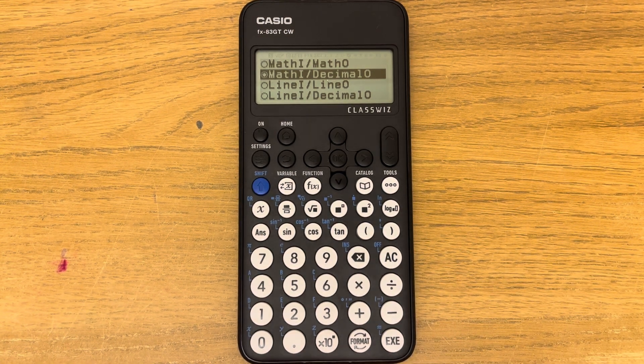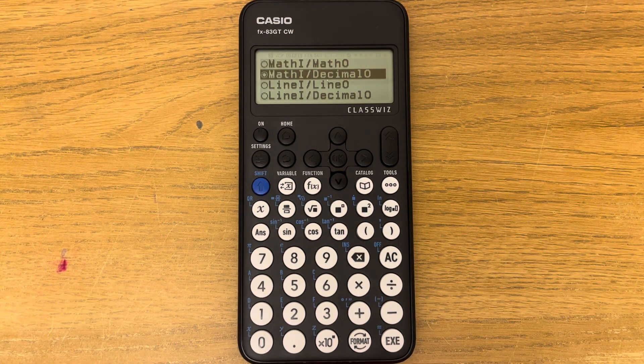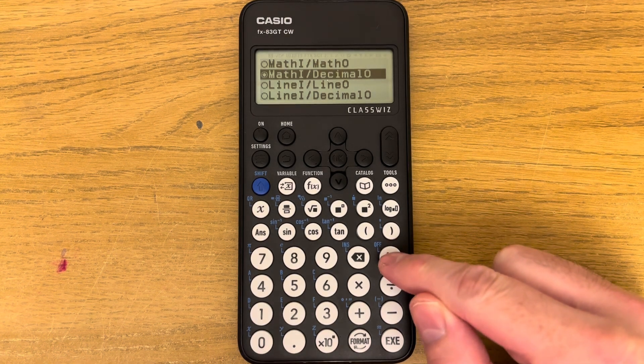So the calculator is now set to give decimal answers first. So let's press AC.